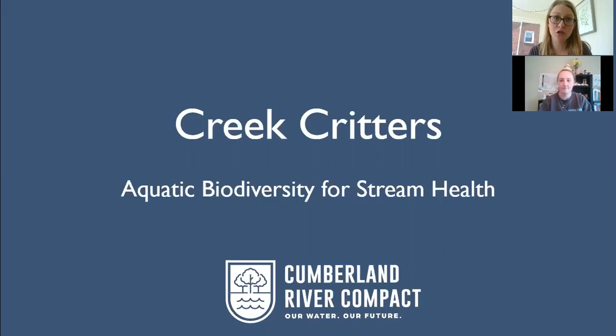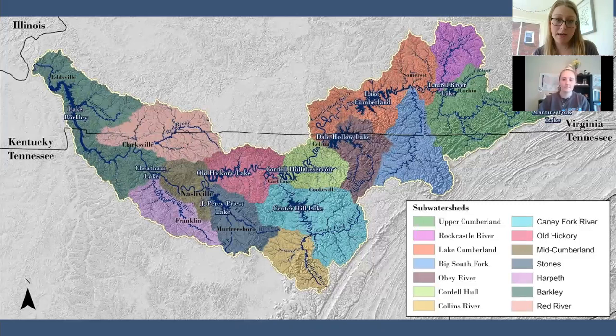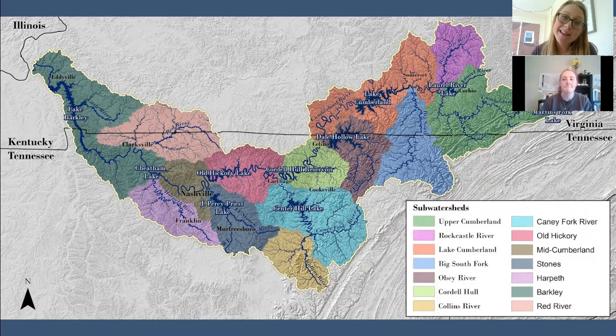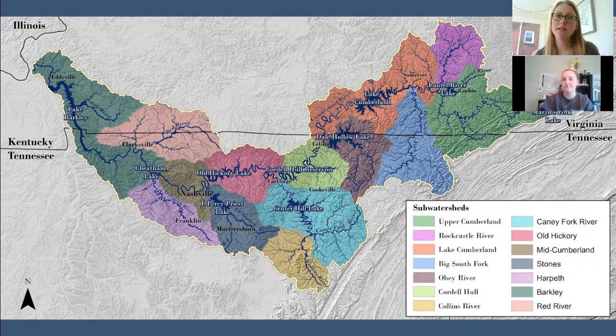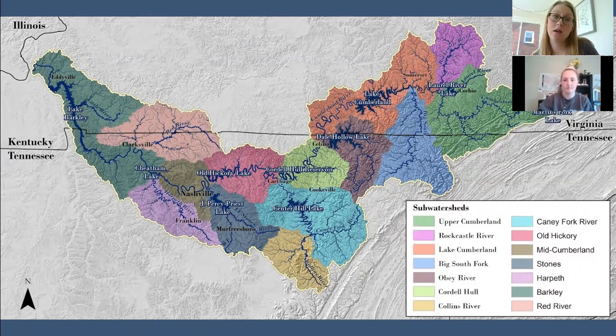First, we'll start with what is the Cumberland River and where is it. The Cumberland River is part of this watershed you see right here. It starts up near Harlan, Kentucky, and flows for about 687 miles through Kentucky, Tennessee, and back into Kentucky. Through that whole area, it's about 18,000 square miles of land that eventually drains to the river. If you look at all those different colored areas on the map, when rain falls on those areas, that water is going to eventually end up in the Cumberland River.